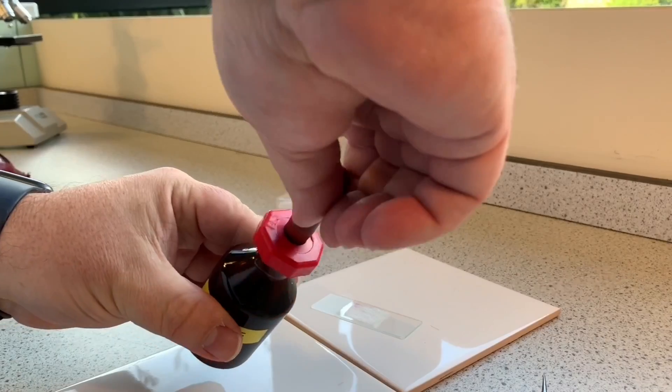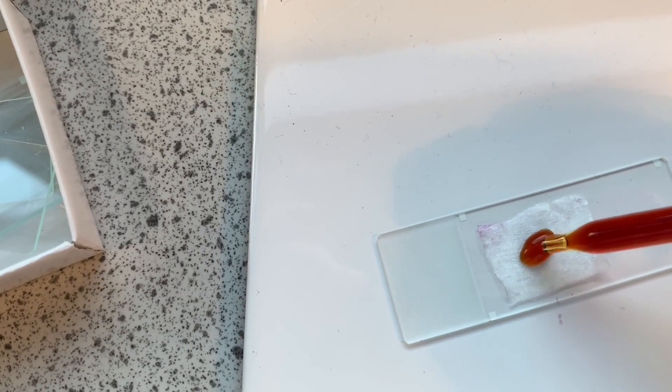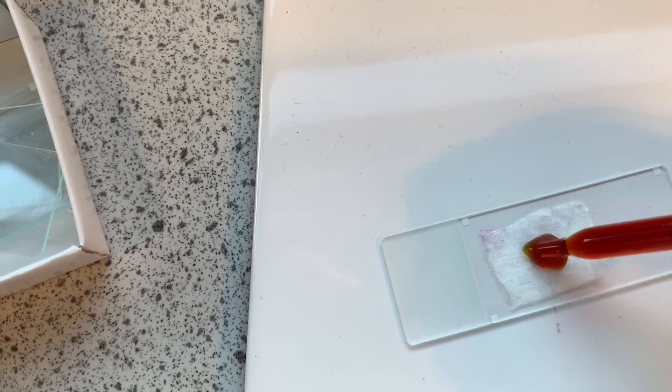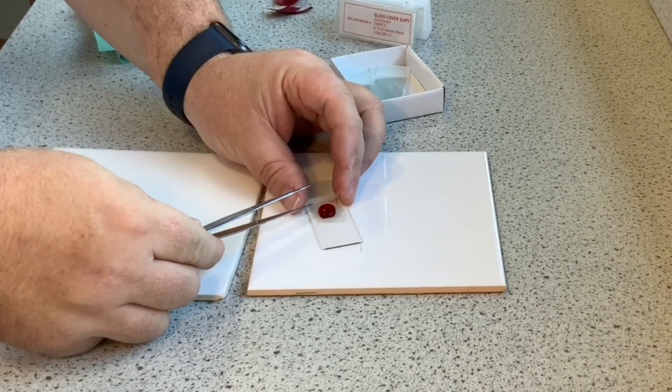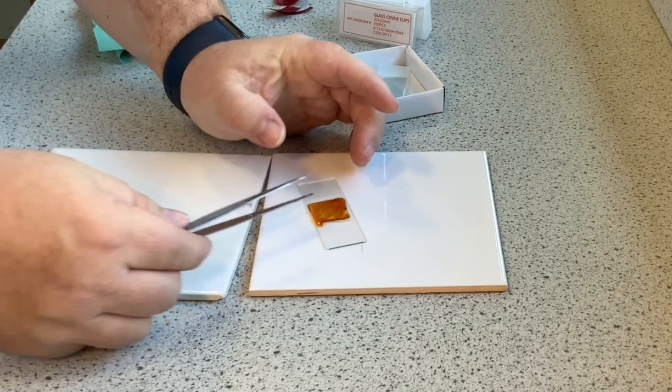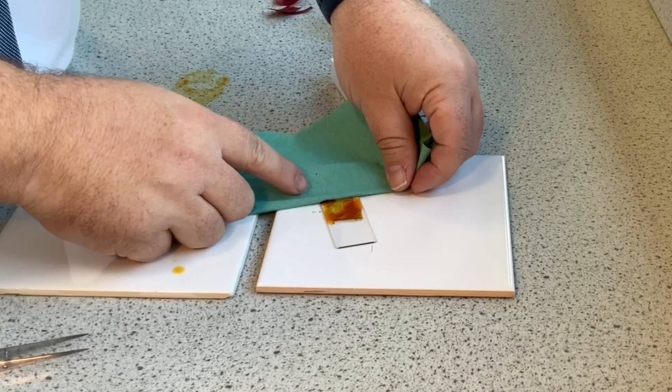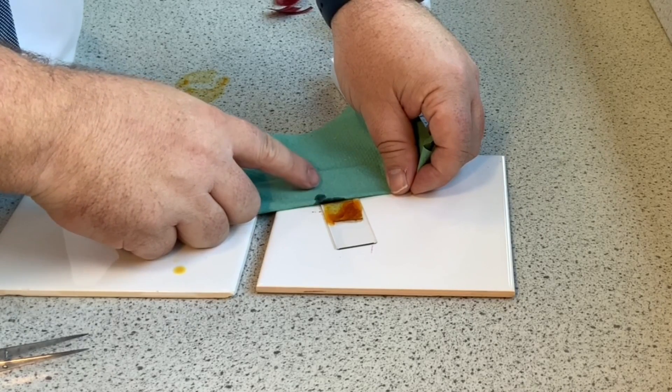The next stage involves staining your specimen. I'm using iodine here. Normally you'd put a drop of water on and then some iodine to really bring out the organelles in the cell. Gently place the cover slip at a 45 degree angle and slowly layer it onto your onion cells. Then gently place a piece of paper towel on the edge of the cover slip to drain out any surplus stain.